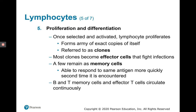For B lymphocytes, effector cells are plasma cells, which secrete antibodies. For T lymphocytes, the effectors are T regulatory cells, T cytotoxic cells, and T helper cells, which can directly or indirectly attack intracellularly infected cells. Effector cells fight infection. A few of the lymphocytes remain as memory cells, but most clones become effector cells.